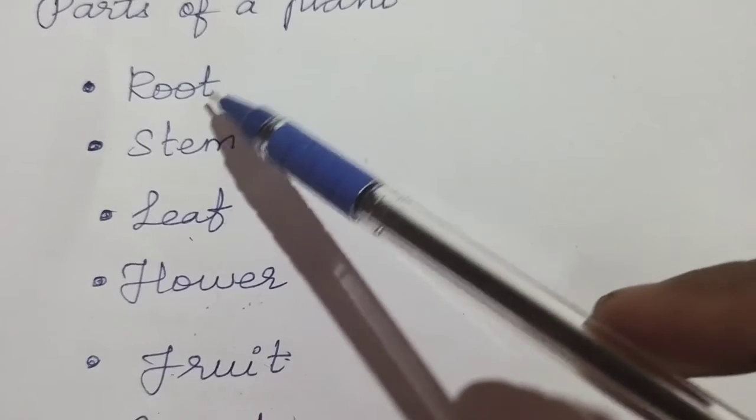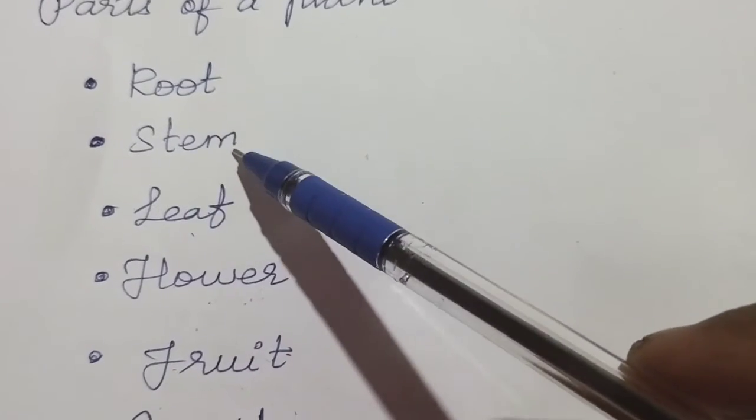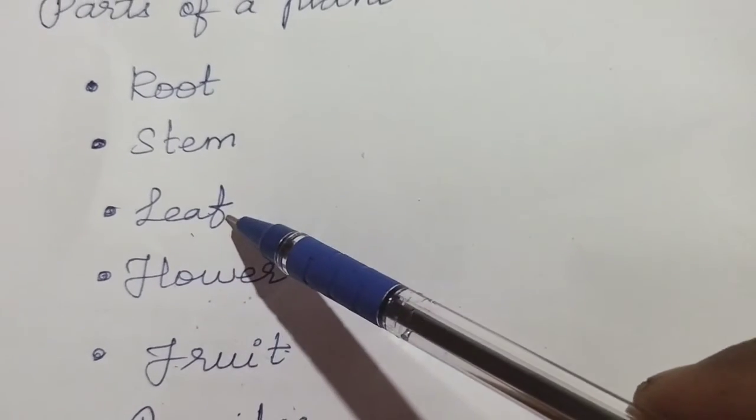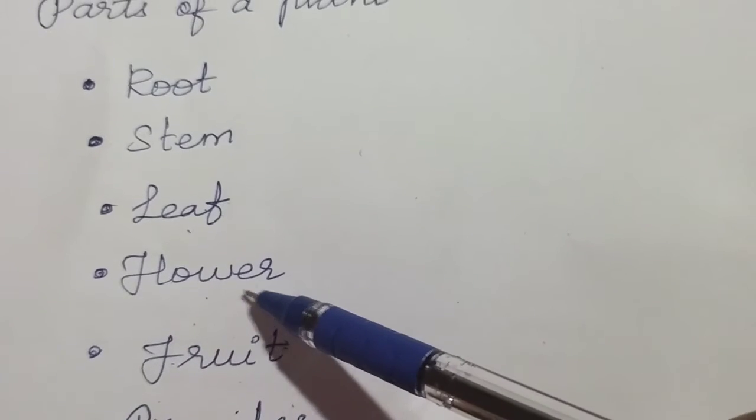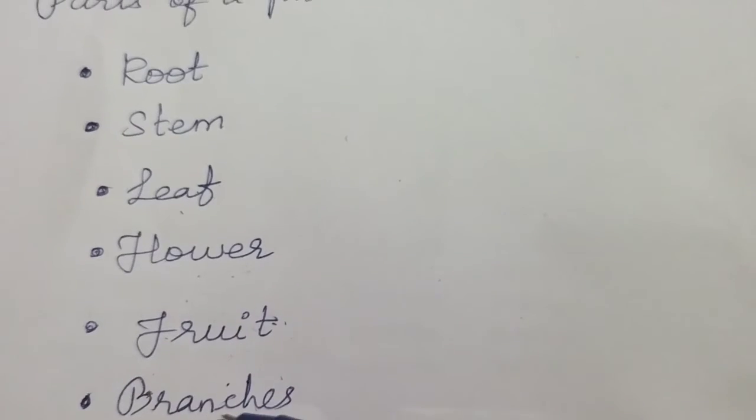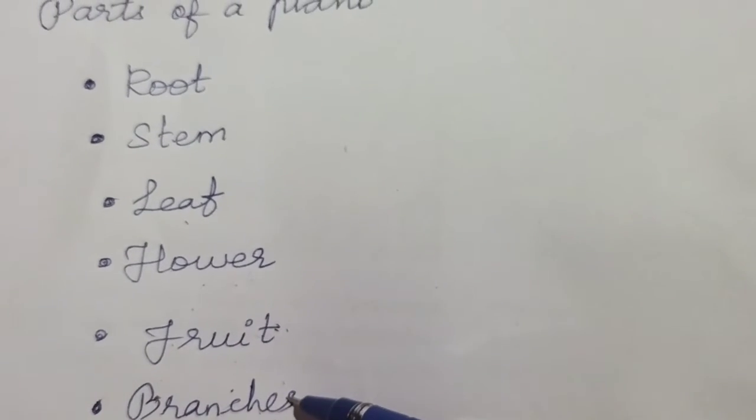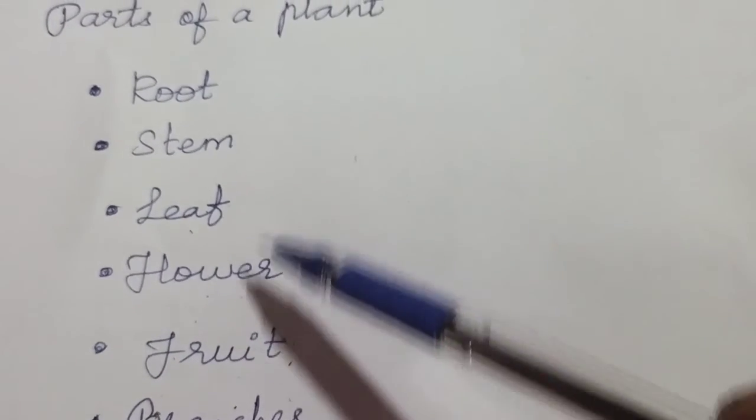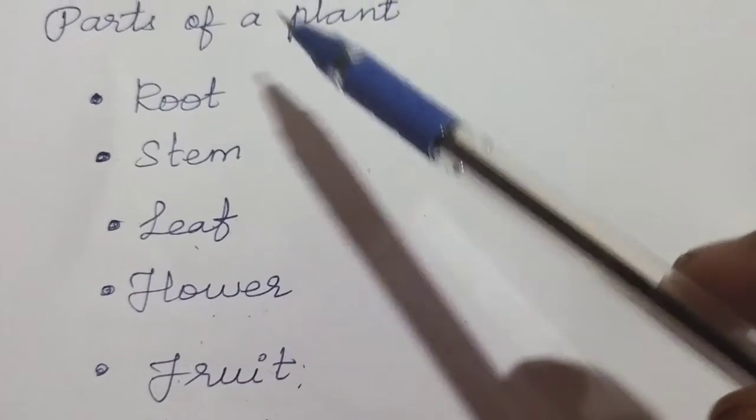Root, R-O-O-T. Stem, S-T-E-M. Leaf, L-E-A-F. Flower, F-L-O-W-E-R. Fruit, F-R-U-I-T. Branches, B-R-A-N-C-H-E-S. So these are the important parts that are present in the plant.